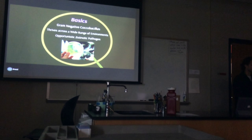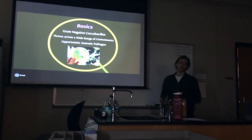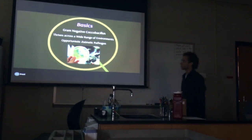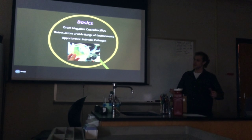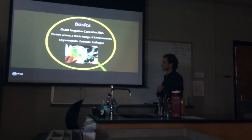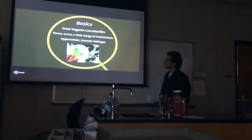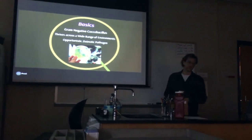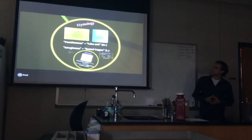The basics of our organism: it is a gram-negative coccobacillus, so it has an intermediate structure between sphere and rod. It thrives across a wide range of environments — this bacterium works just about anywhere. It's very robust, an opportunistic pathogen, and also a zoonotic pathogen, so we're not the only species that can be infected.